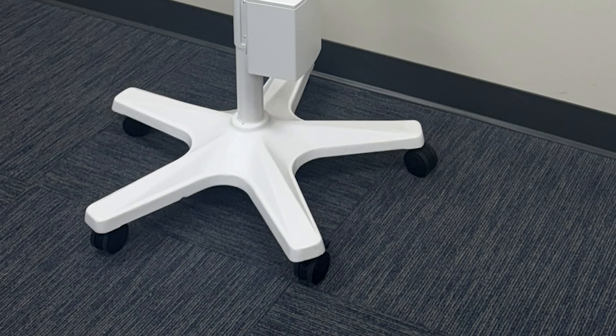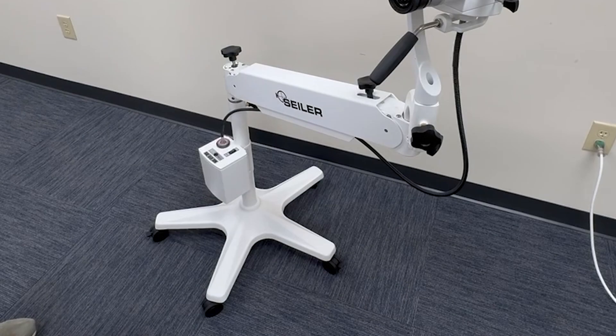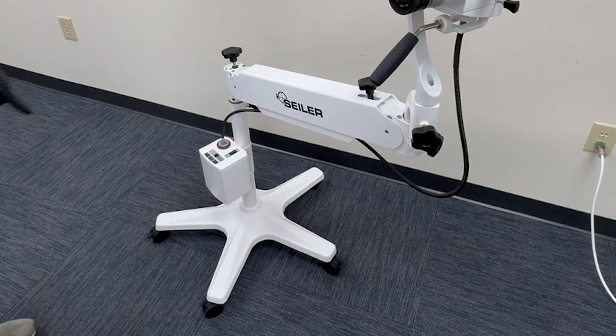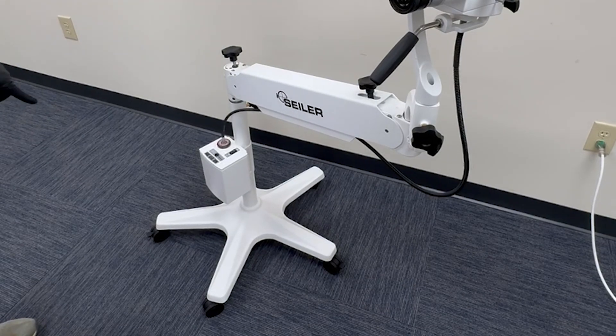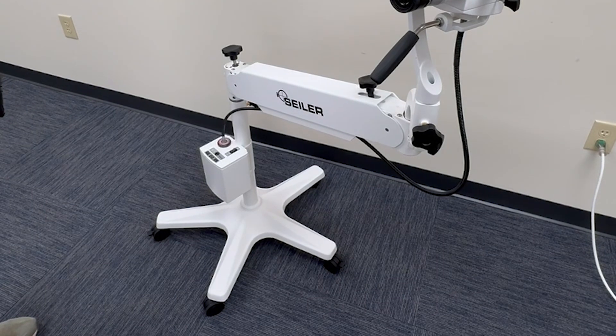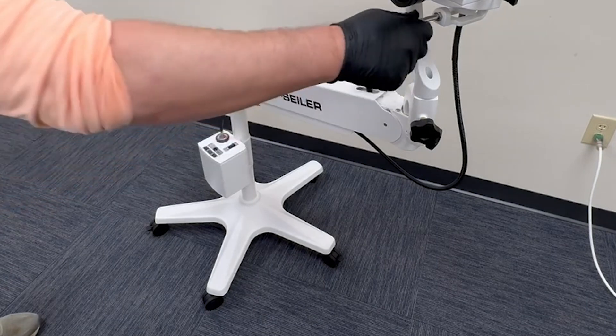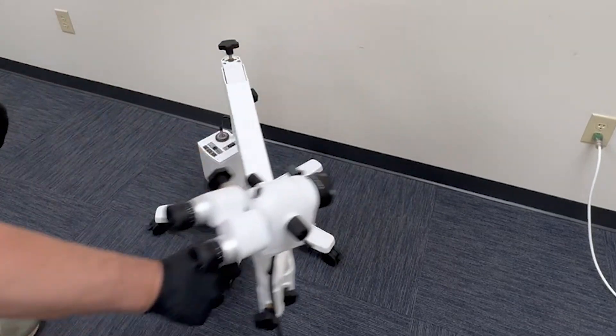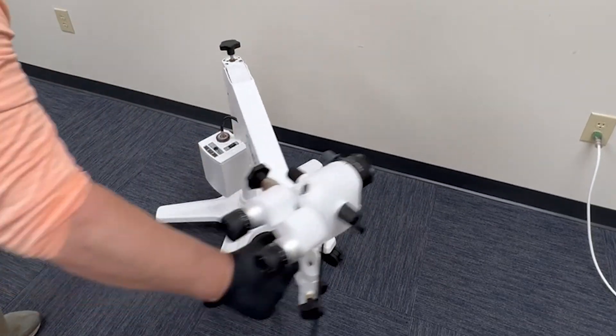The 955 Colposcope sits on a 5-star, sturdy base. Each Colposcope is equipped with three locking casters, ensuring that the base can be securely locked in place whenever necessary. This feature guarantees that the Colposcope remains stable and stationary during critical examinations, providing both safety and precision.